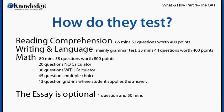And finally, the math section. It's 80 minutes long — that's an hour and 20 minutes. It has 58 total questions and is worth one half, or 800, of the possible 1600 points. 20 of the 58 questions don't allow you to use a calculator, but 38 of those 58 questions do allow you to use a calculator. Of the 58 questions, 45 are multiple choice and 13 are grid-ins — those are the student-produced response ones. The essay is optional, 50 minutes long, and you get one essay question.